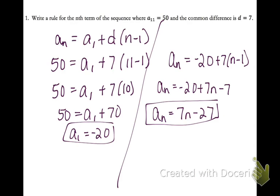For this first problem, I was given one term and my common difference. So I took my equation. I plugged 50 in for a sub n. I plugged 7 in for d and 11 in for n. After simplifying, I got my first term to be negative 20. Then whenever I wrote my formula out to the right, I simplified it by distributing the 7 and then combining like terms.